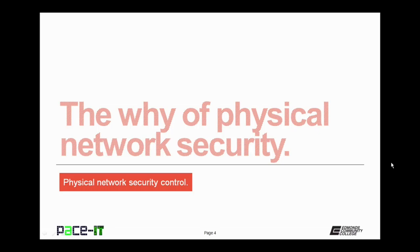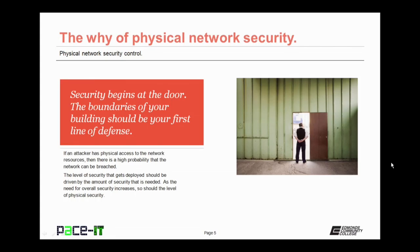I'm going to begin by discussing the why of physical network security. Your network security actually begins at the door. The boundaries of your building should be your first line of defense. If an attacker has physical access to the network resources, then there is a high probability that those network resources can be breached. The level of security deployed should be driven by the amount of security needed, and as that need increases, so should the level of physical security.